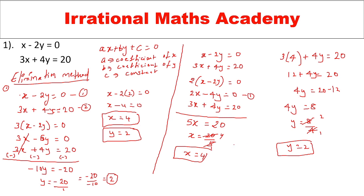Is it clear? Either you can eliminate x or you can eliminate y. In the first case, if you want to eliminate x, you need to multiply one equation by minus. But in the second case, if you want to eliminate y, you only need to multiply by 2 — no need to multiply by minus. We'll solve one more problem.